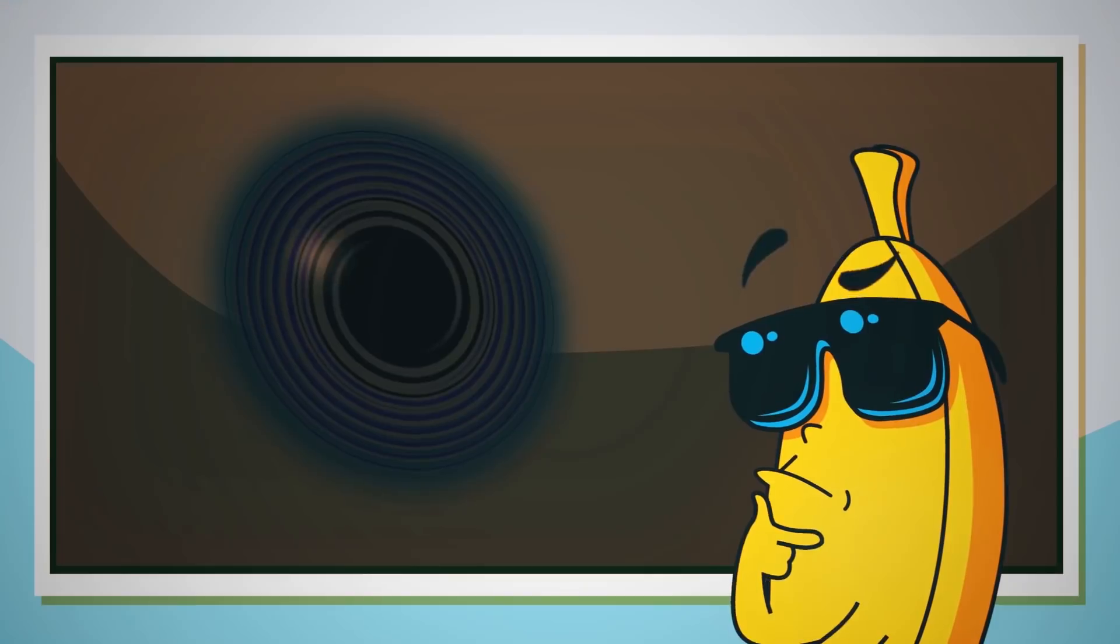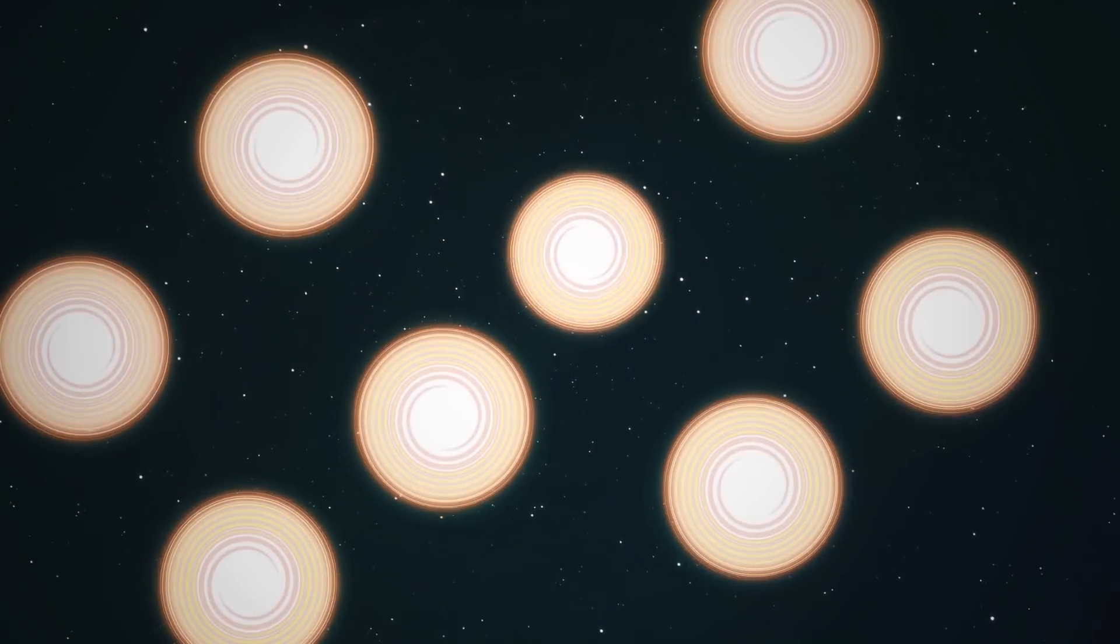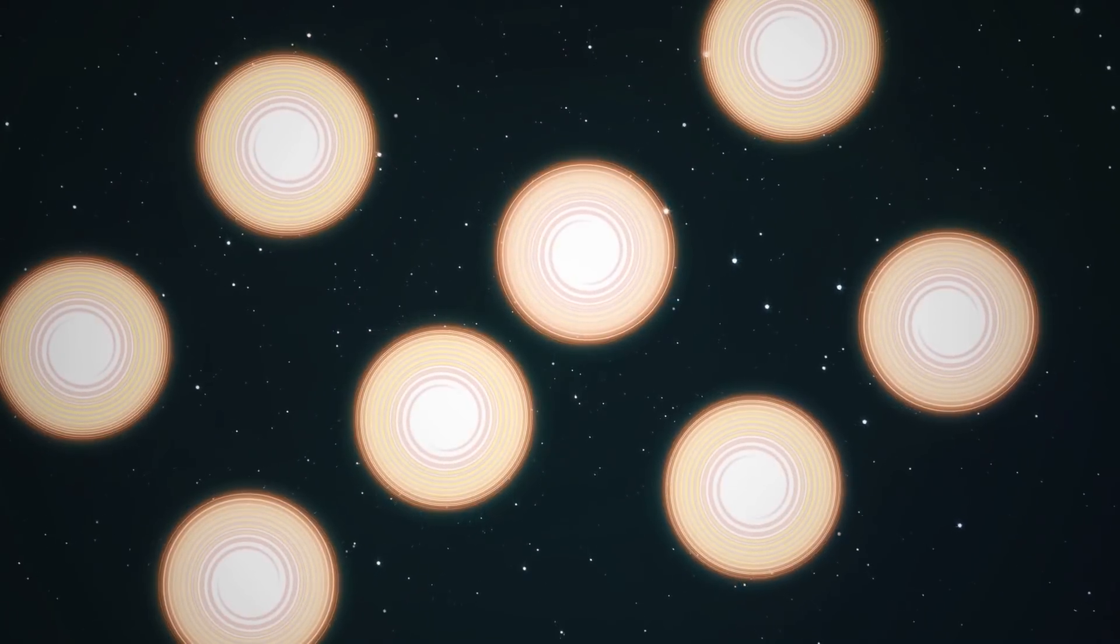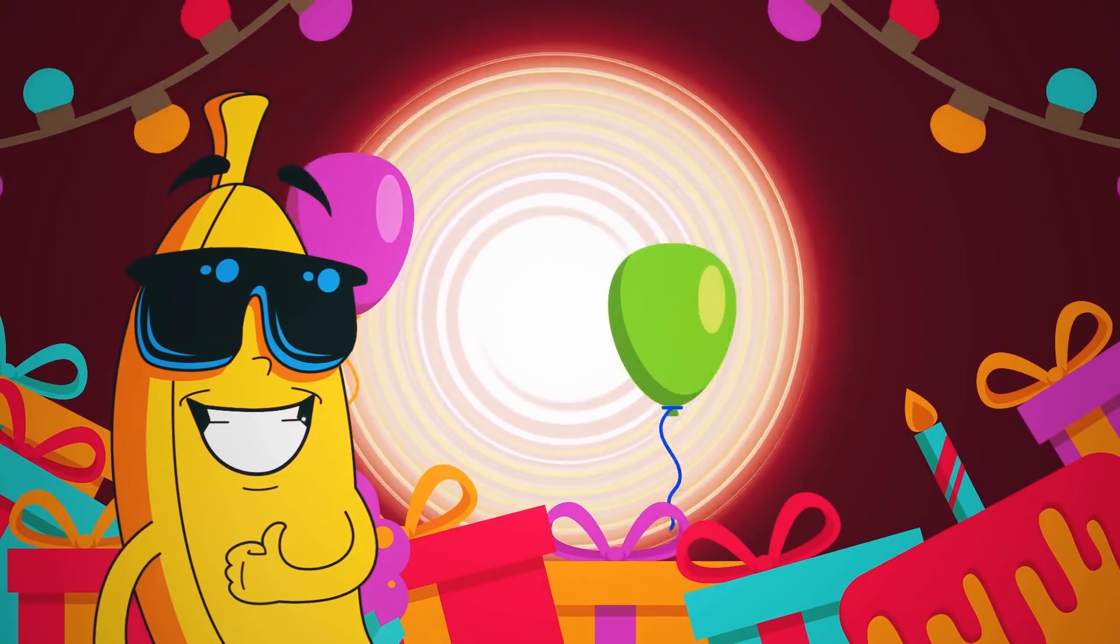A black hole becomes a white hole at the end of its evaporation. Black holes result from collapsed stars, but when these astral corpses die, they may actually turn into white holes. Welcome to the world, baby white hole!